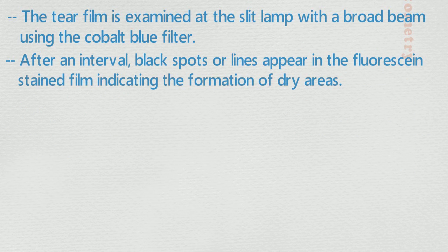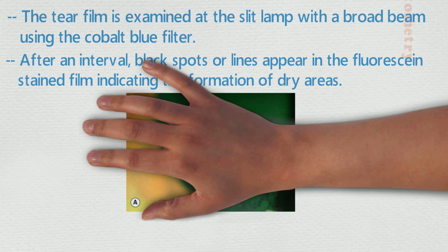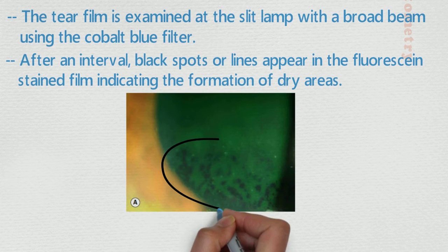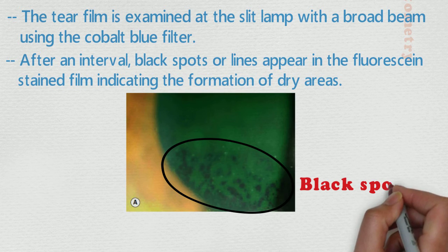After an interval, black spots or lines appear in the fluorescein-stained film indicating the formation of dry areas. Here, in this figure, these are the black spots due to tear breakup.